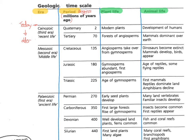Which brings us to the next obvious thing we can do: calculate how long these periods last for. Looking at the Devonian — it began 400 million years ago and finished 350 million years ago — therefore it lasted for 50 million years. That's about as tricky as it gets in terms of interpreting the information: when did things start, when did they finish, and therefore how long did they last for?